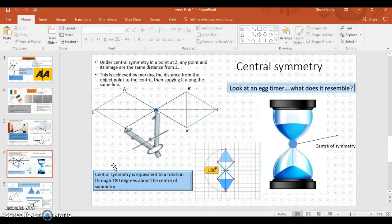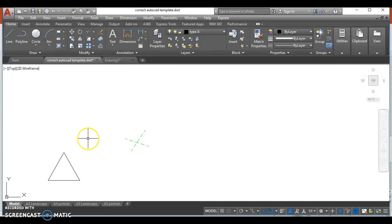So how do we draw an object using central symmetry? It's easily done by using AutoCAD. So if we get our line, draw each line in to our center point. Like so.